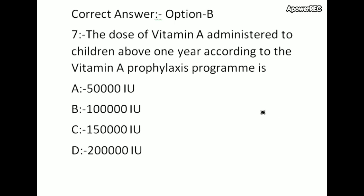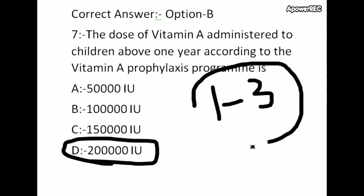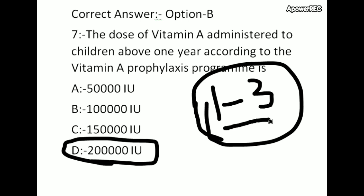The dose of vitamin A administered to children above one year according to the vitamin A prophylaxis program is 2 lakh international units. Vitamin A administration is a prophylaxis program against nutritional blindness, given between one to three years of age. 2 lakh international units of vitamin A orally, once in six months.